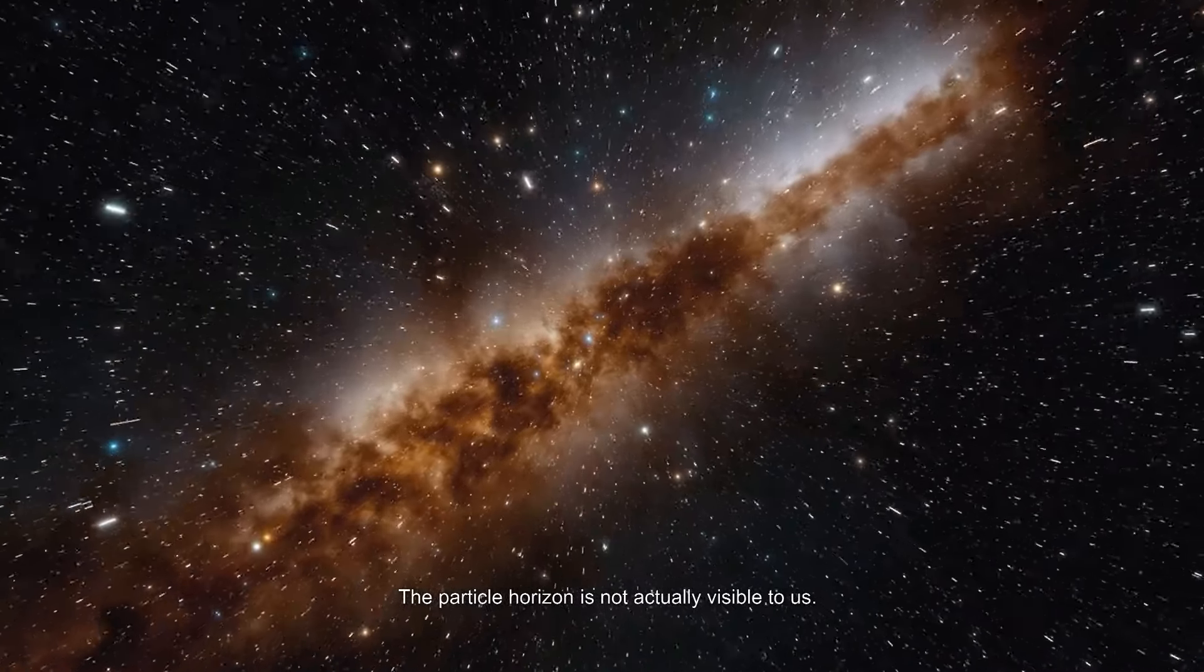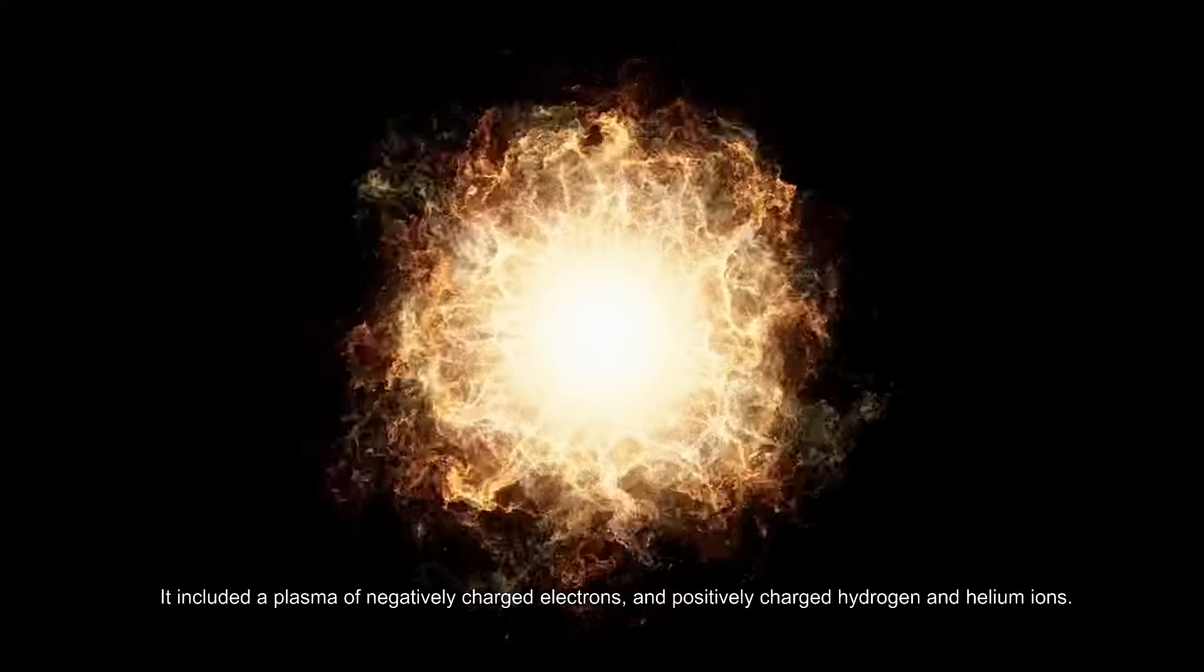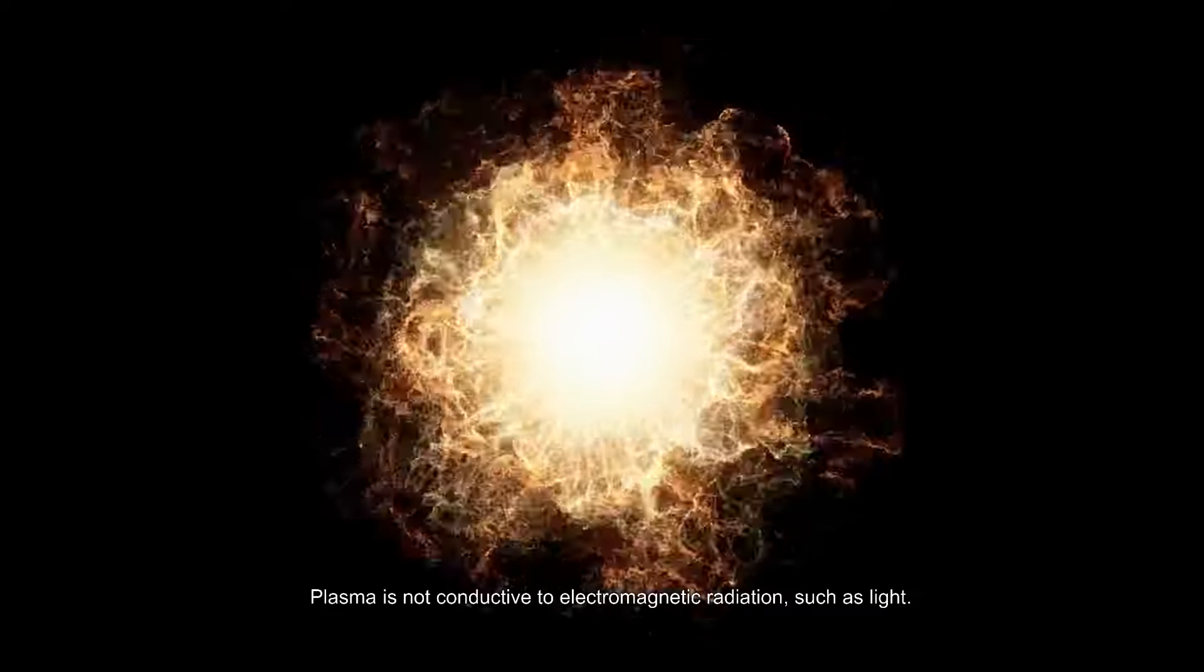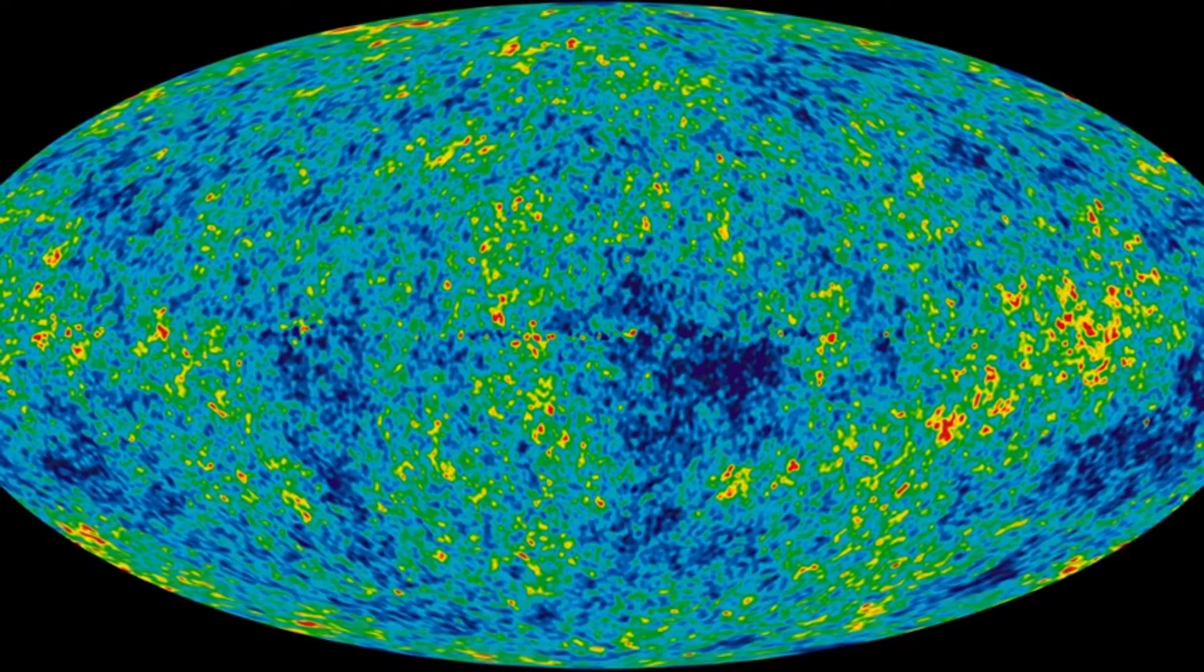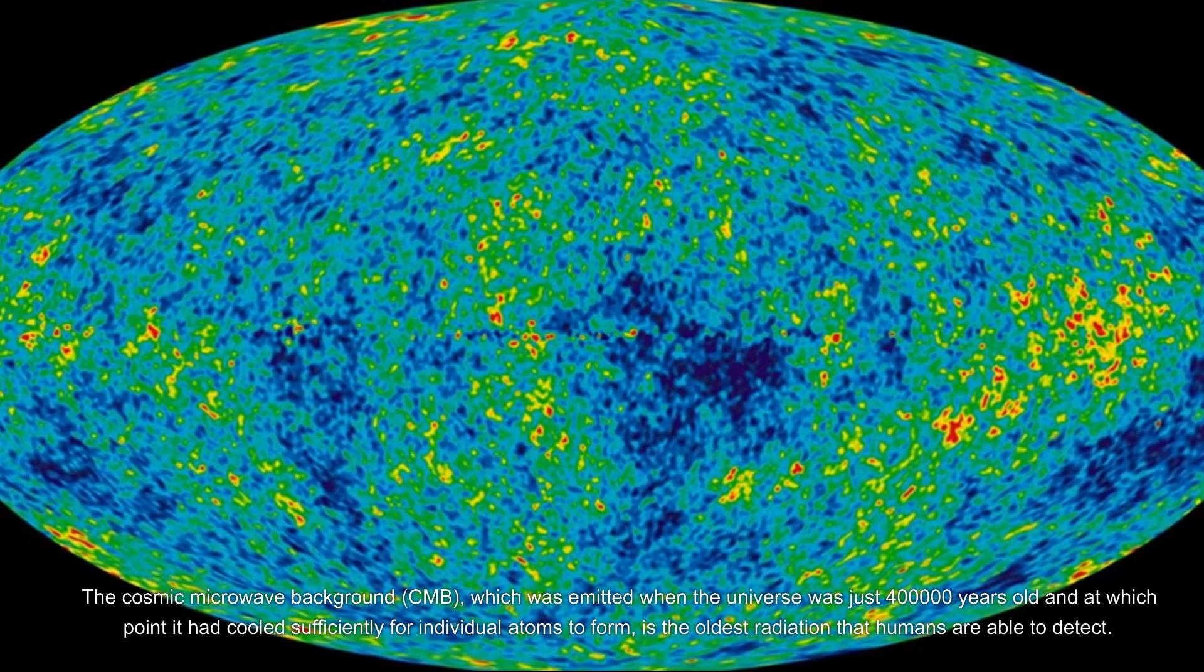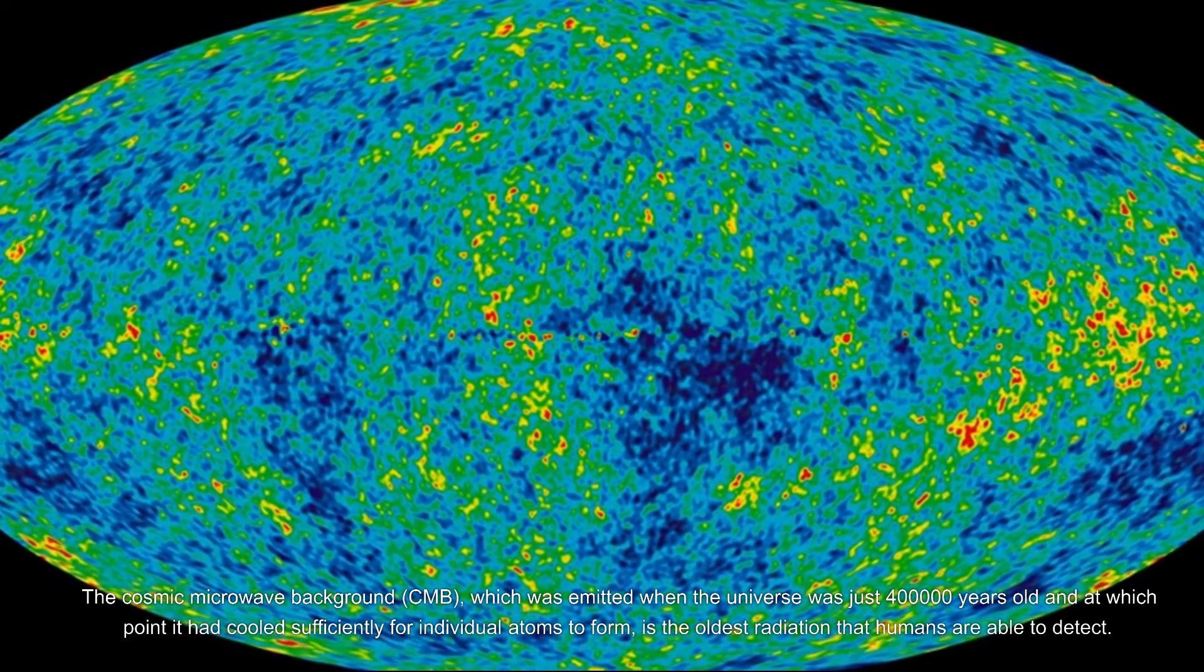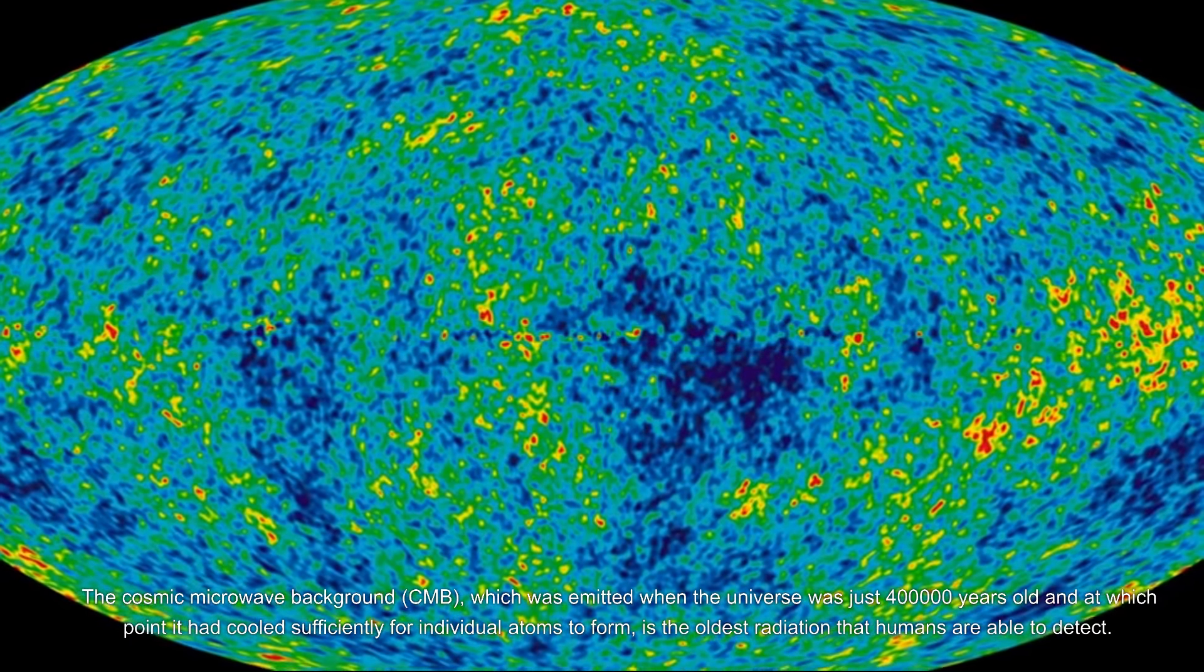It included a plasma of negatively charged electrons and positively charged hydrogen and helium ions. Plasma is not conductive to electromagnetic radiation such as light. The cosmic microwave background (CMB), which was emitted when the universe was just 400,000 years old and at which point it had cooled sufficiently for individual atoms to form, is the oldest radiation that humans are able to detect.